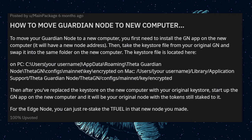For Mac users, the keystore file is under: Users/[username]/Library/Application Support/theta-guardian-node/theta-gn/configs/mainnet/key/encrypted. After you've downloaded the node to the new computer, go in and delete the new keystore file in that location, then paste your old keystore file in that spot. Restart your computer and start up your Guardian Node — it should be the original node with your stake. For Edge Node users, you can restake the TFuel to the new node you made.